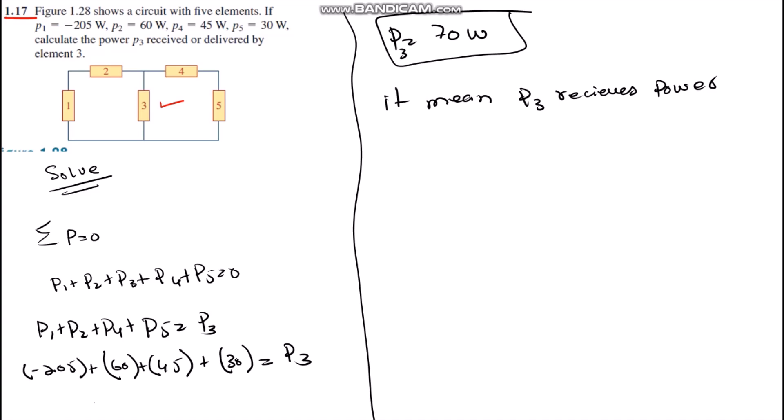Then we know that the summation of all powers, means sum of all powers in any circuit, is equals to 0. We use the following method: we put all the powers equals to 0.